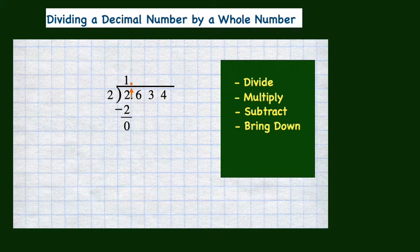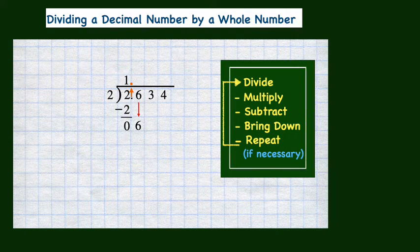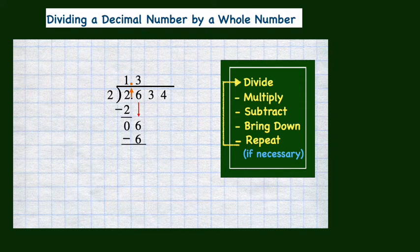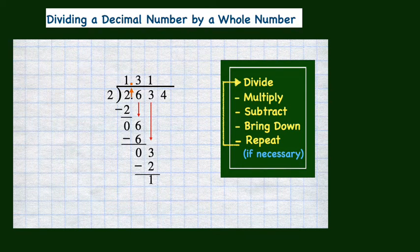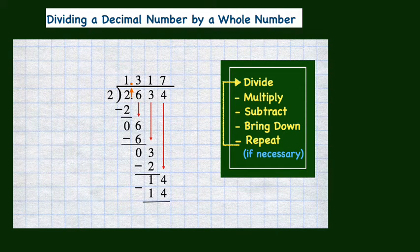The next step is to bring down the next digit in the dividend. So we'll bring down this 6, and we'll repeat the whole division process again. 2 divides into 6 three times. 3 times 2 is 6. 6 minus 6 is 0, and we'll bring down the next digit of 3. 2 divides into 3 one time. 1 times 2 is 2. Subtracting 2 from 3 is 1, and we'll bring down the next digit of 4. We need to divide 2 into 14, and 2 divides into 14 seven times. 7 times 2 is 14, and when we subtract 14 from 14, we get 0.